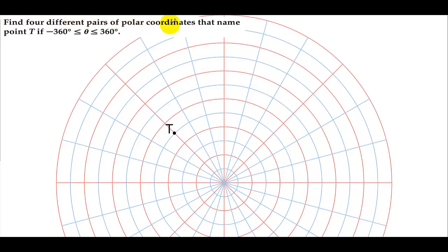Find four different pairs of polar coordinates that name the point T, if θ is between -360° and 360°. This angle is 3π/4, if we're going in the positive direction. So our first point can be - and remember, it's always (r,θ) - the radius is 5, and we can have 3π/4.